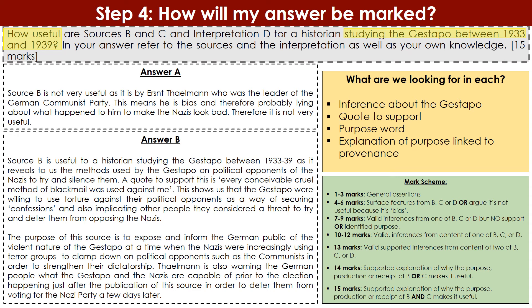Marks 10–12: if you make a valid inference from the content of one of B, C or D and back it up with a quote, you're in 10–12 marks. If you make two supported inferences — one for B and one for C — you're looking at around 13 marks. Marks 14: if you support the explanation of the purpose to show why it makes the source useful — from B or C — that's 14 marks. If you do that fully for both B and C, that's 15 marks. Interpretation D doesn't feature at 14–15, but it features at every level underneath, which is why it's still important as a safety net lower down the mark scheme.